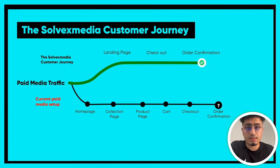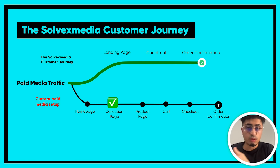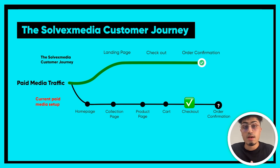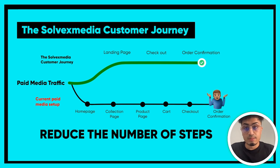The more steps one needs to take to get to buying, the lower your conversion rate. With Solvex Media landing pages, you push people to a landing page, they go to checkout, then order confirmation — three steps. What most people are doing is pushing traffic to the home page, where users then need to find the collection, find the product, go to the cart, then checkout, and maybe confirm the order — over six steps. Reduce the number of steps and people are more likely to buy.